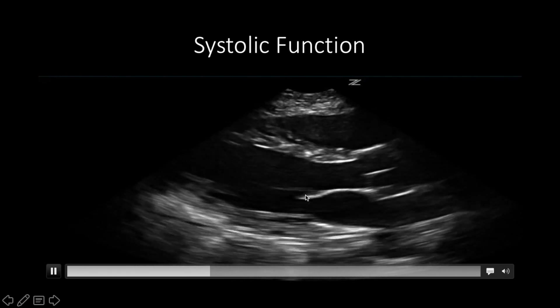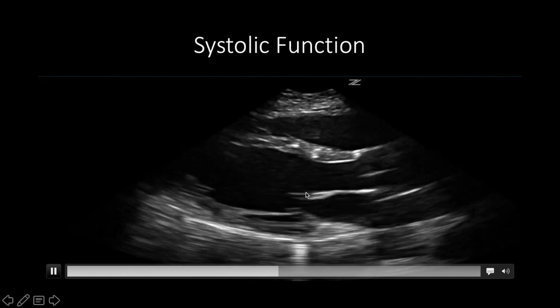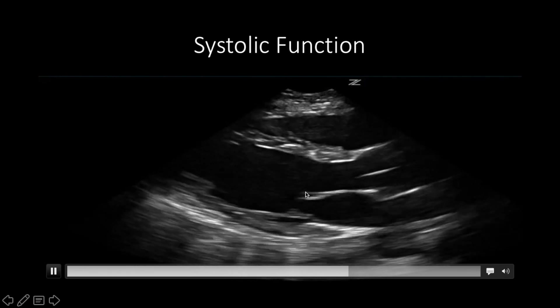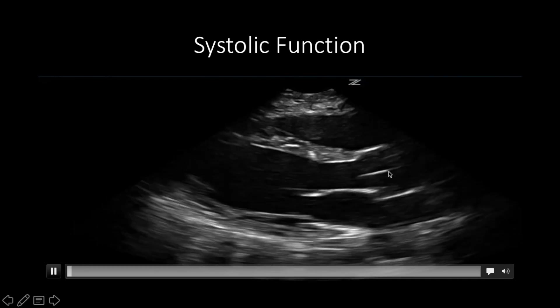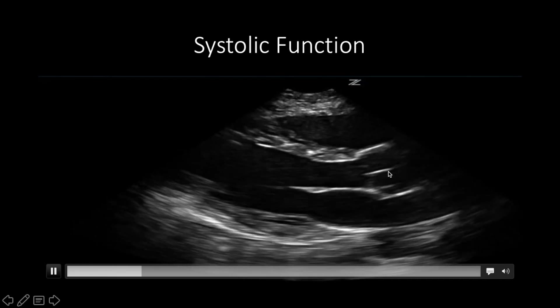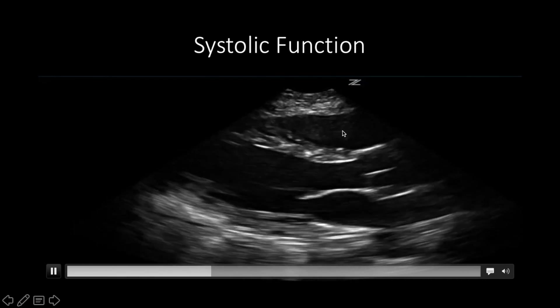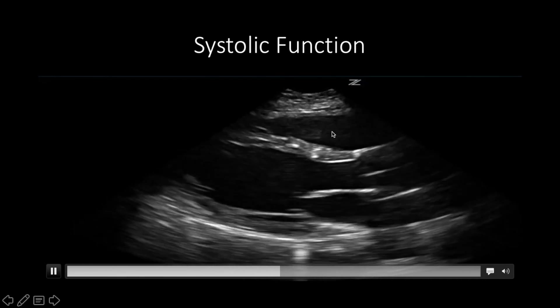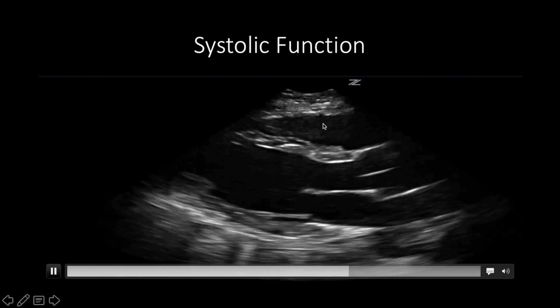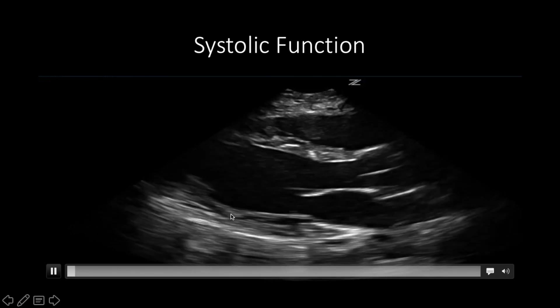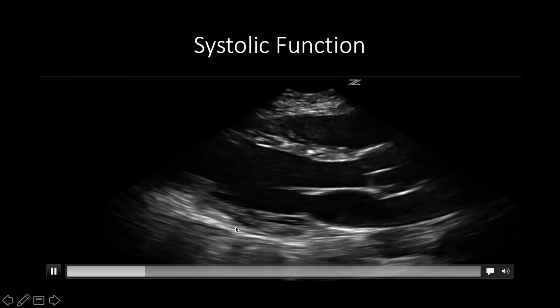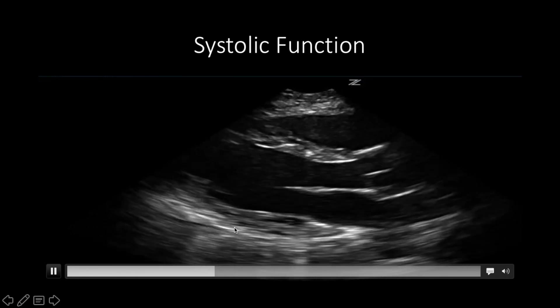We can also see the aortic outflow and the right ventricle, as well as the septal wall and the inferior walls of the ventricle.